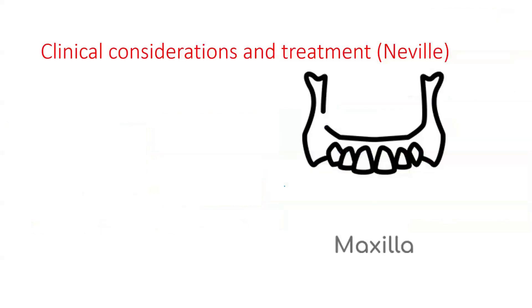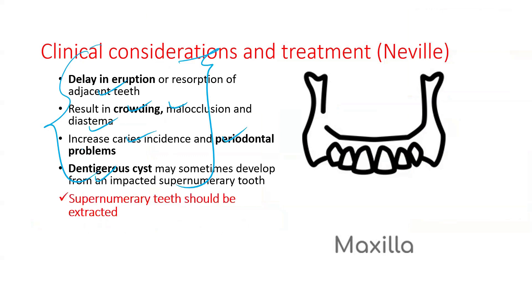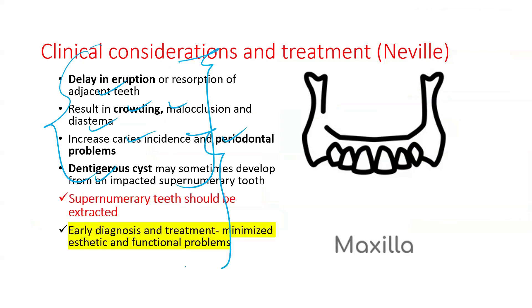Coming to clinical considerations and treatment: supernumerary teeth can cause delayed eruption of adjacent teeth, crowding, malocclusion, diastema, increased caries, periodontal problems, and a dentigerous cyst if the tooth remains unerupted. The most common treatment is extraction. Early diagnosis and treatment are advocated to minimize aesthetic and functional problems.